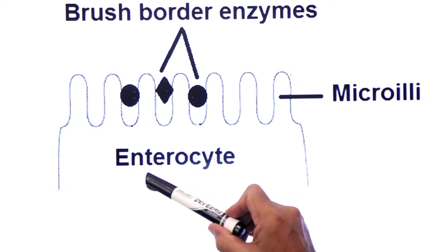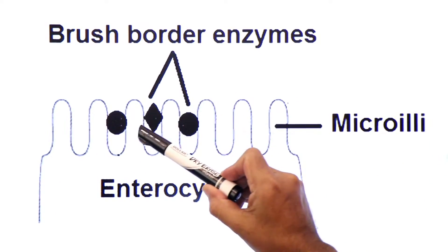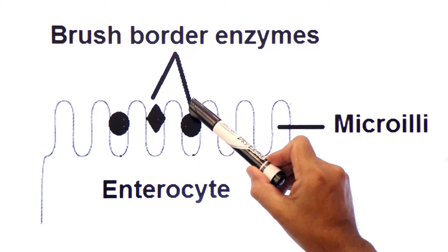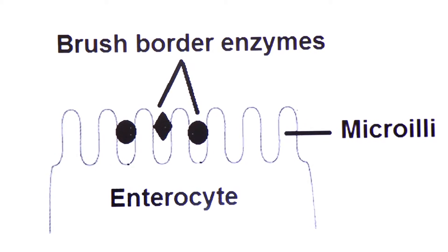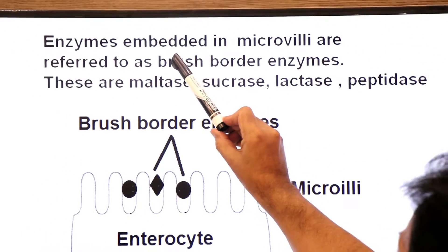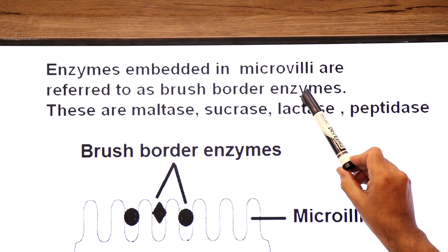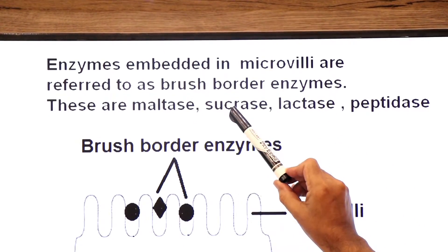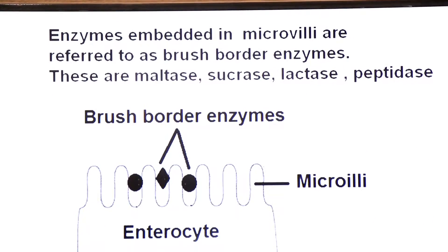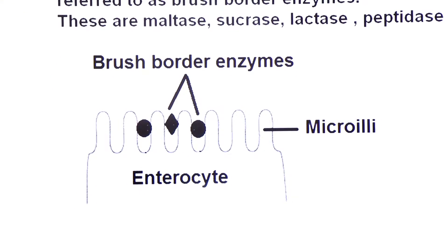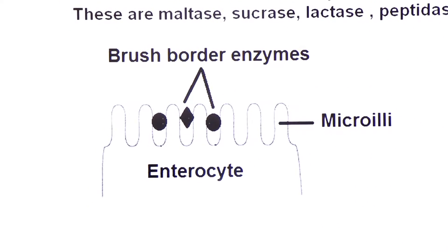Here you can see the enterocytes and their microvilli. The enzymes embedded in the microvilli are known as brush border enzymes. Examples of brush border enzymes include maltase, sucrase, lactase, and peptidase. These enzymes complete the digestion process in the jejunum.